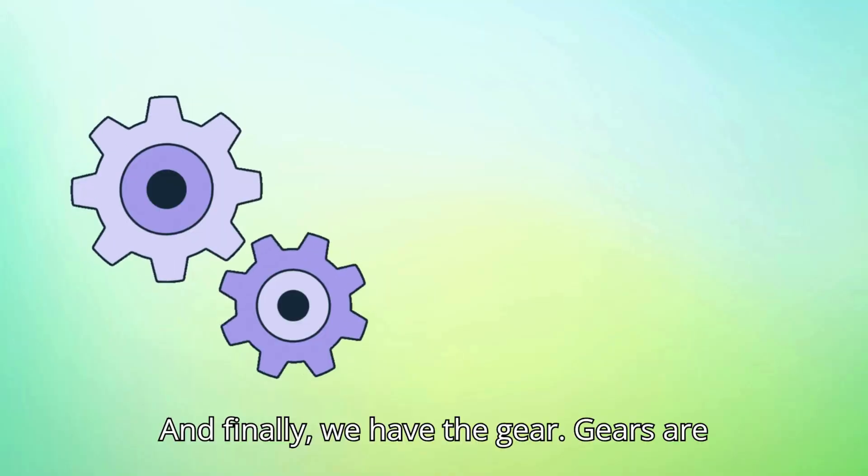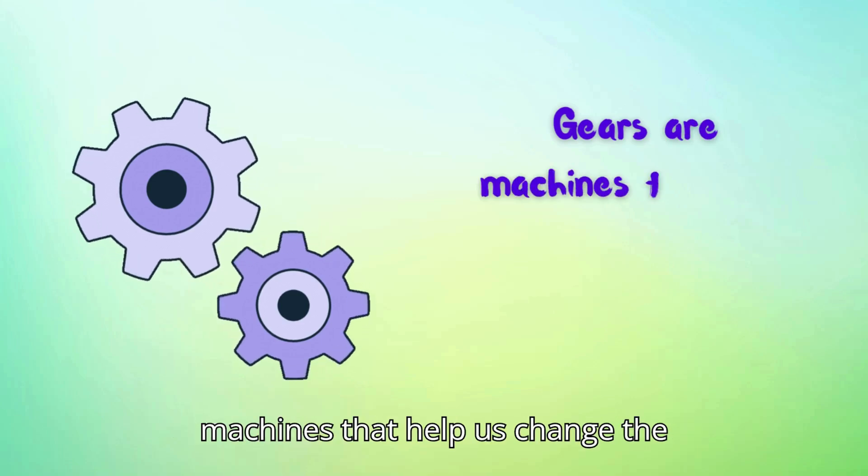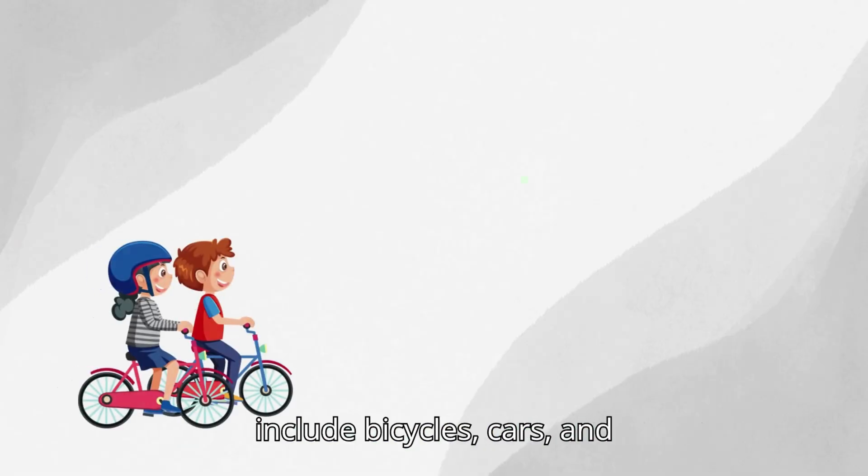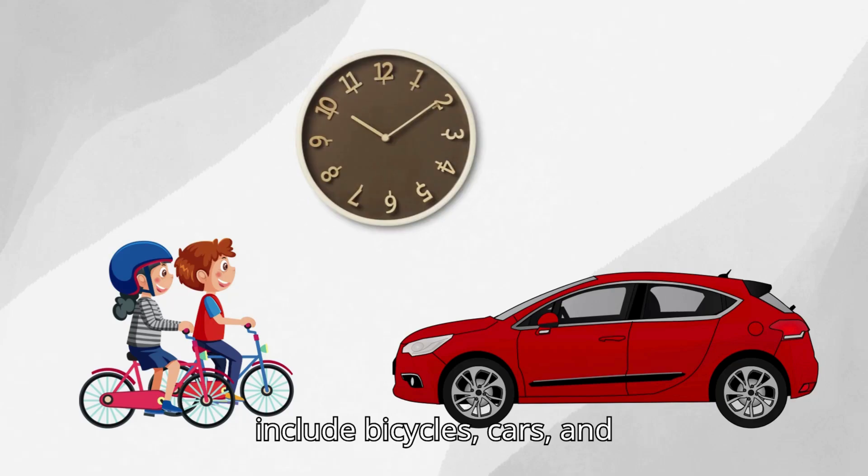And finally, we have the gear. Gears are machines that help us change the direction or speed of motion. Examples include bicycles, cars, and clocks.